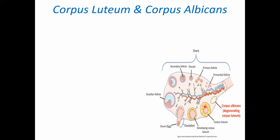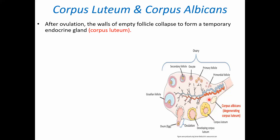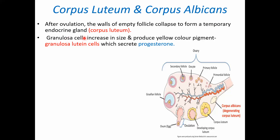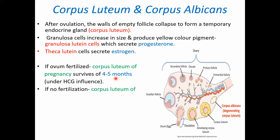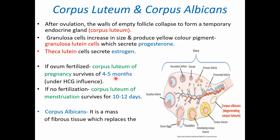Corpus luteum is yellow in color, whereas corpus albicans is white. After ovulation, the walls of the empty follicle collapse to form a temporary endocrine gland called the corpus luteum. Granulosa cells increase in size and produce a yellow pigment — these are granulosa lutein cells, which secrete progesterone. Theca lutein cells secrete estrogen. If the ovum is fertilized, it is called corpus luteum of pregnancy, surviving 4 to 5 months under HCG influence. If not fertilized, it is corpus luteum of menstruation, surviving only 10 to 12 days. Corpus albicans is a mass of fibrous tissue replacing the degenerated corpus luteum.